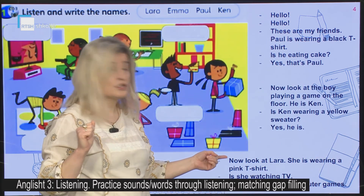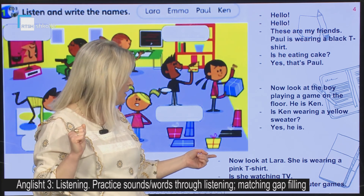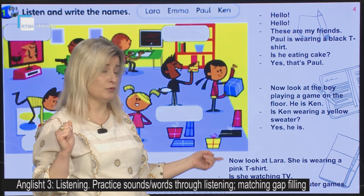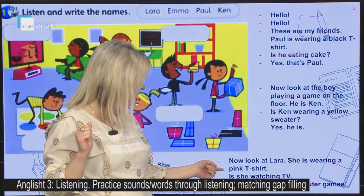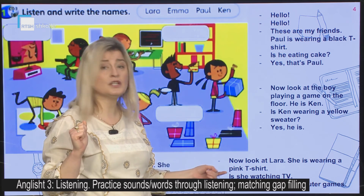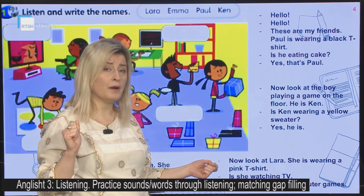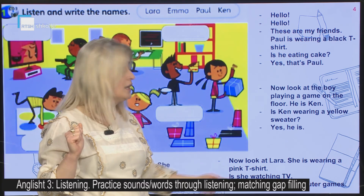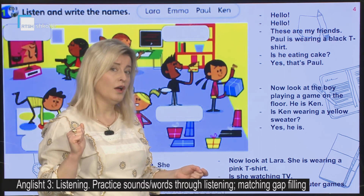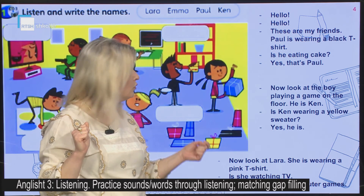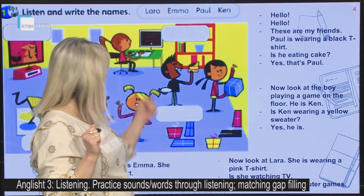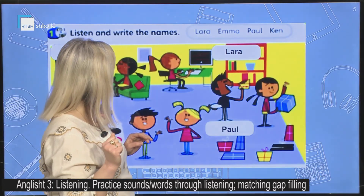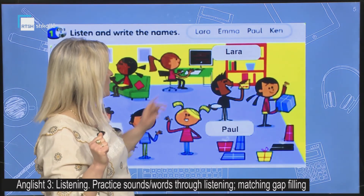Bashkojmë me personajin tjetër. Now, look at Lara. Shikojmë Larën. She is wearing a pink t-shirt. Ajo ka veshur një bluzë me mëngë të shkurtra rozë. Is she watching TV? A është ajo duke parë televizor? No, she is playing computer games. Jo, ajo është duke luajtur lojëra kompjuterike.